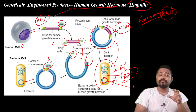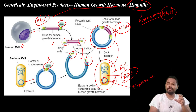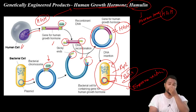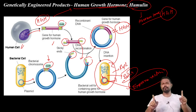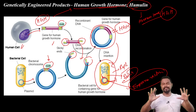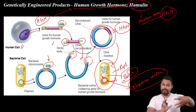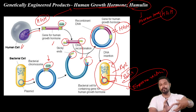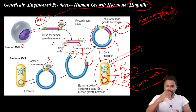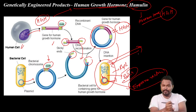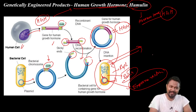The recombinant DNA is inserted into an expression vector, so you can translate it and produce large quantities of the protein. If you have bacteria, you can use proteins to help you express the gene.